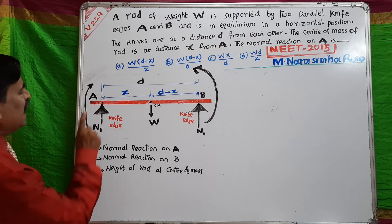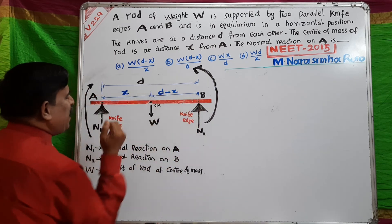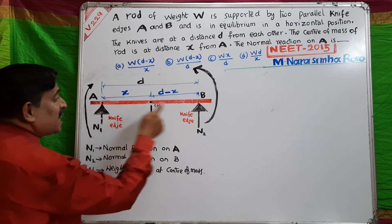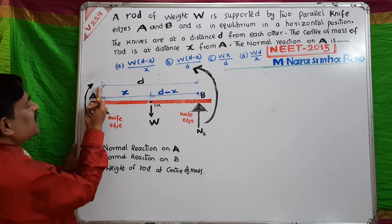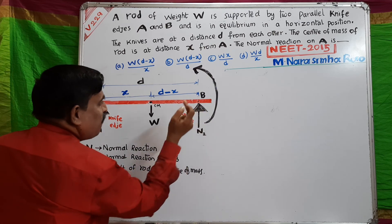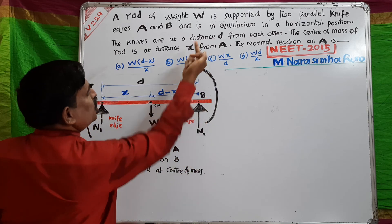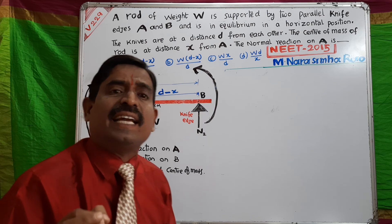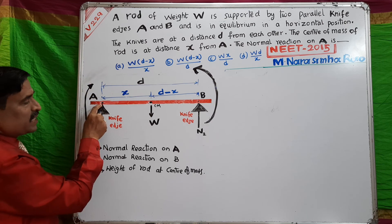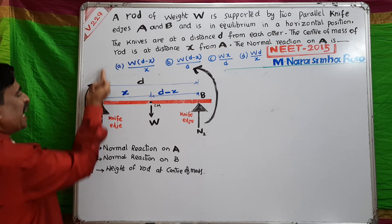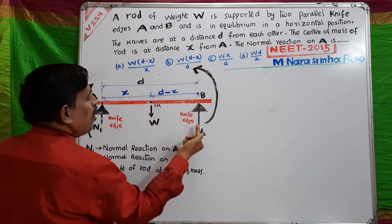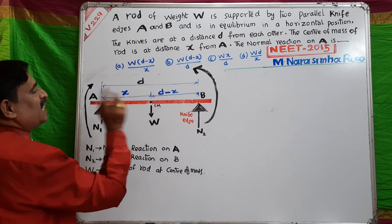The two knife edges at A and B balance this horizontal rod. These knife edges exert normal reactions — N1 is the normal reaction at point A, and N2 is the normal reaction at point B. Normal reaction means it is perpendicular to the surface of contact, acting upward. N1 acts upward at point A, and N2 acts upward at point B. The weight of the rod acts downward at the center of mass.